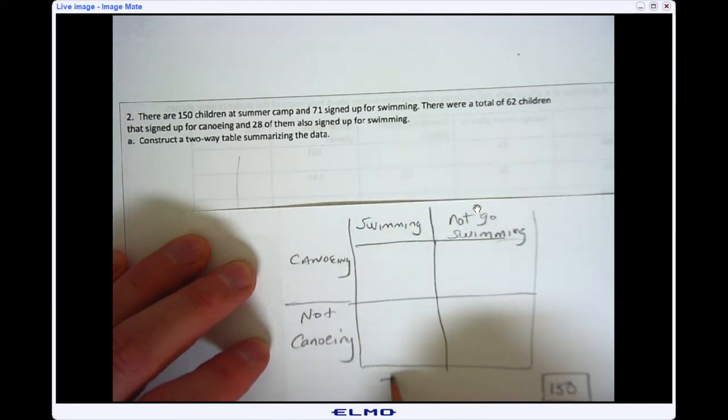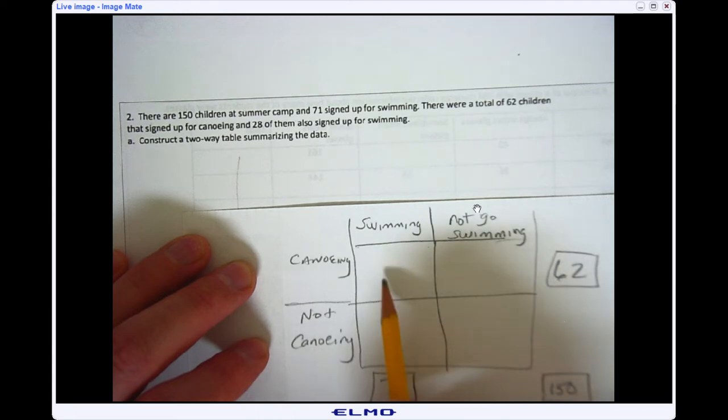And it says there were 62 students that signed up for canoeing. So here's the canoeing total, and 28 of them also signed up for swimming. So we're going to put 28 here because they signed up for swimming and canoeing.